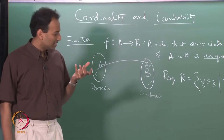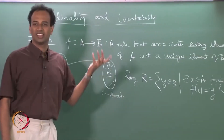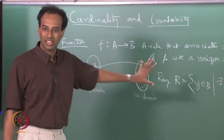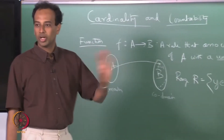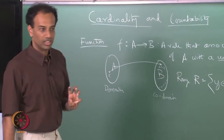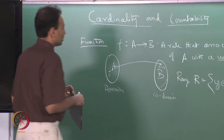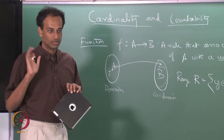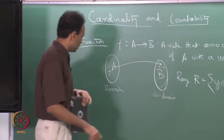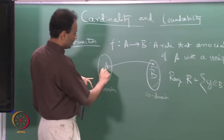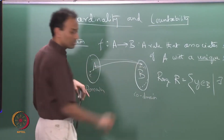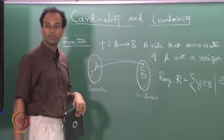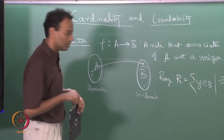Some people call the co-domain the range, but it is useful to distinguish the co-domain and the range. Also remember: you can have multiple elements mapping to the same element in B — that is allowed. But you cannot have one element mapping to multiple things — that is not allowed.